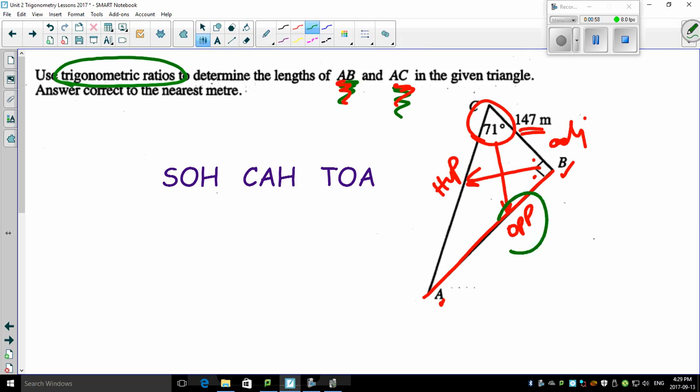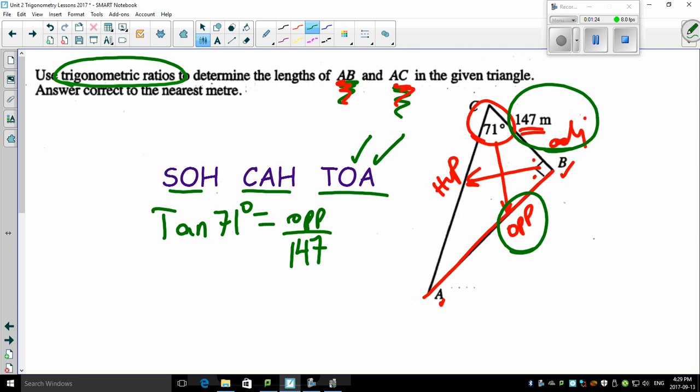Here we go. I'm dealing with opposite and adjacent. So if I'm dealing with opposite and adjacent, go to your SOHCAHTOA. Who is opposite and adjacent? There's opposite and there's adjacent. It's got to be tangent. So tangent of the angle, which is 71 degrees, equals our opposite, which we don't know, over our adjacent of 147.